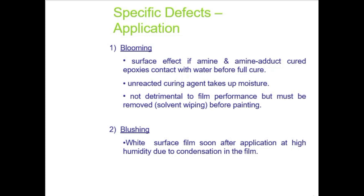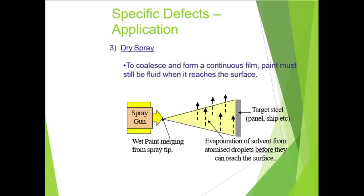A special application defect is amine blush, which occurs when amine-cured epoxy contacts water before full cure. The unreacted curing agent is not detrimental to film performance but must be removed before overcoating. Blooming produces a white surface film soon after application at high humidity due to condensation. Dry spray occurs when the atomized paint droplets lose solvent through evaporation before reaching the surface — paint must still be fluid when it reaches the surface.